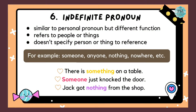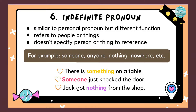Alright, let's continue from the last time. The sixth type of pronoun is indefinite pronoun. Do you still remember personal pronoun? Because indefinite pronoun is similar to it. But the thing is, indefinite pronoun refers to people or things but they don't specify person or thing to reference. For example, someone, anyone, nothing or nowhere. Number one: there is something on the table. Someone just knocked the door. And last one: Jack got nothing from the shop.